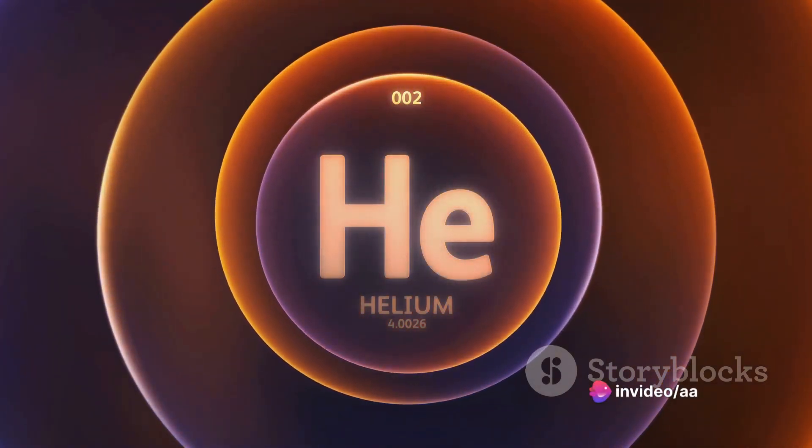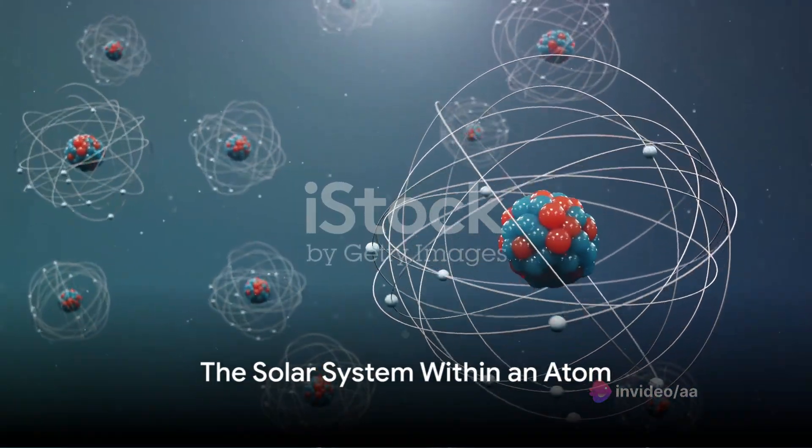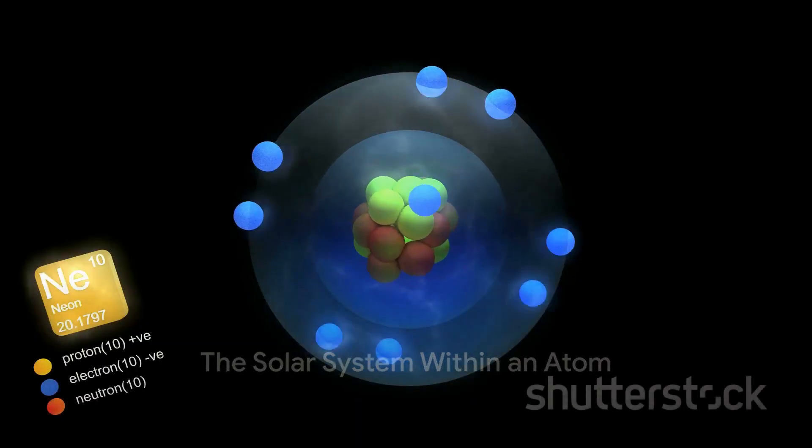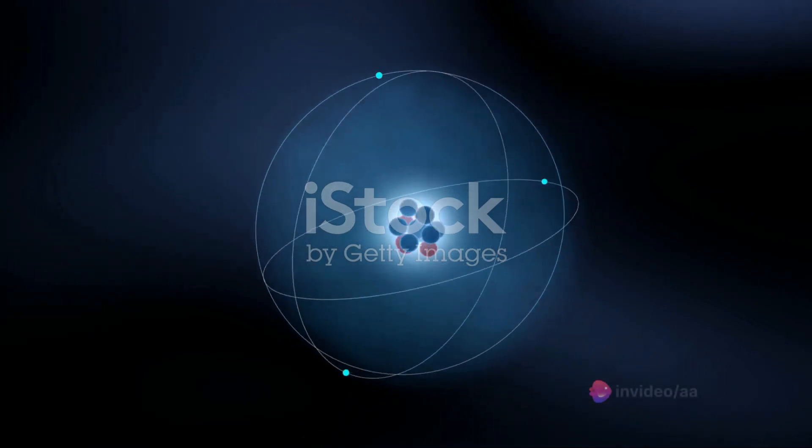It's the atomic number that designates an element's position on the periodic table. Now imagine an atom as a miniature solar system. The nucleus, home to the protons and neutrons, is the sun. The electrons are like planets, orbiting in the vast space around the nucleus.